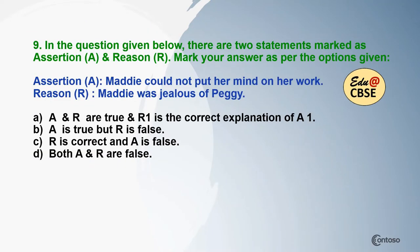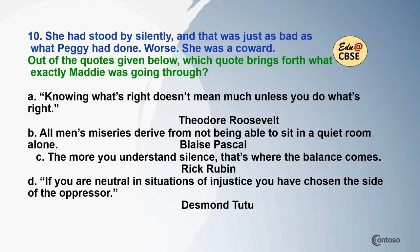Question 9: In the question below, there are two statements — Assertion (A) and Reason (R). Mark your answer as per the options given, after carefully reading both. Assertion: Mary could not put her mind on her work. Reason: Mary was jealous of Peggy. Question 10: 'She had stood by silently and that was just as bad as what Peggy had done. Worse, she was a coward.' Which of the codes given below brings forth what exactly Mary was going through? Decide which code justifies what was going on in Mary's mind at that time.